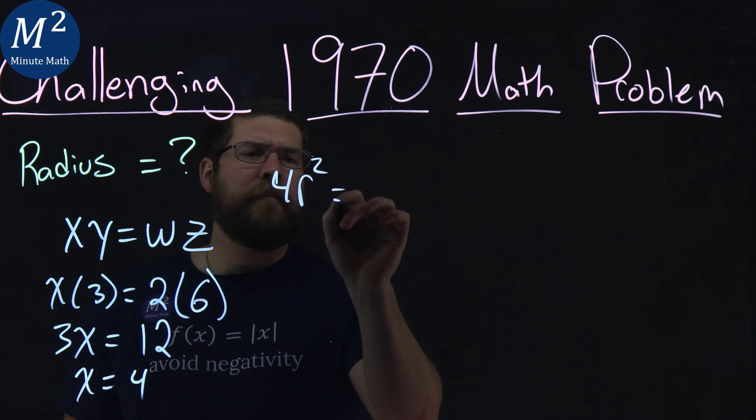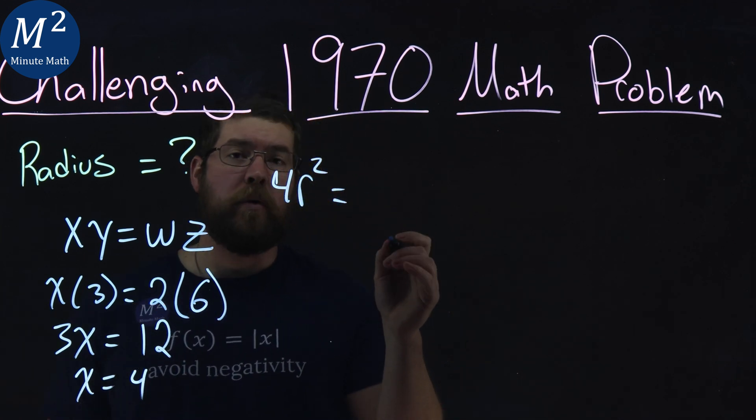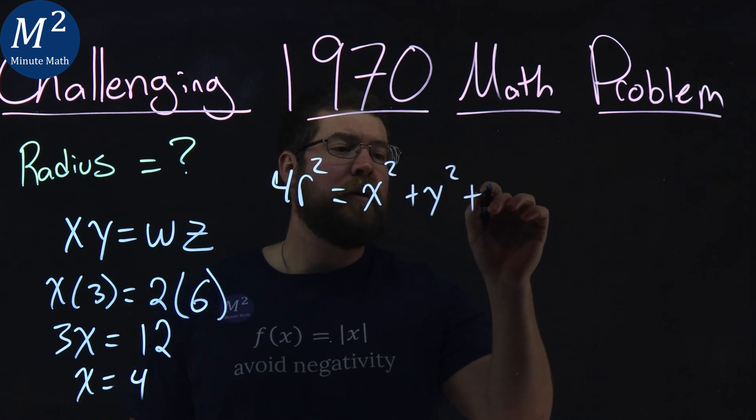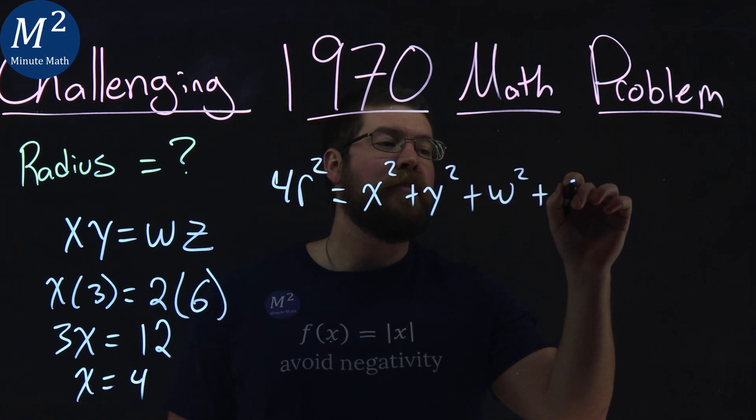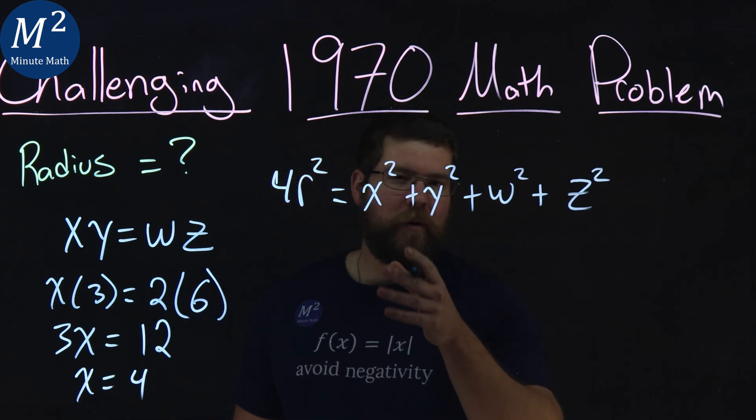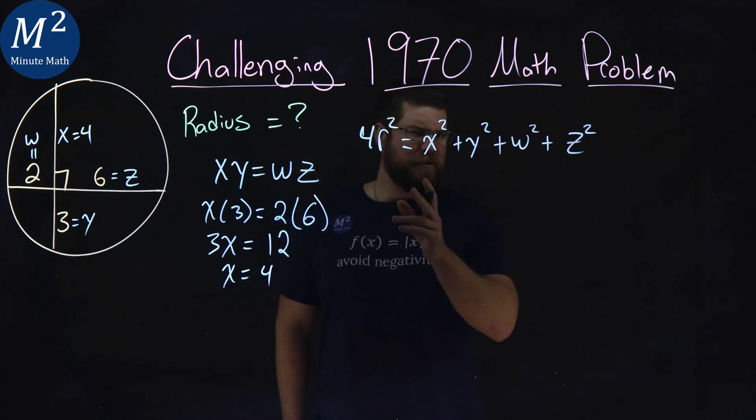And that equation here, there's a proof for it, is 4r squared is equal to, and we have our chords, our x squared plus y squared plus w squared plus z squared. And that's a pretty cool formula to come up with and prove. So make sure you check that out again.